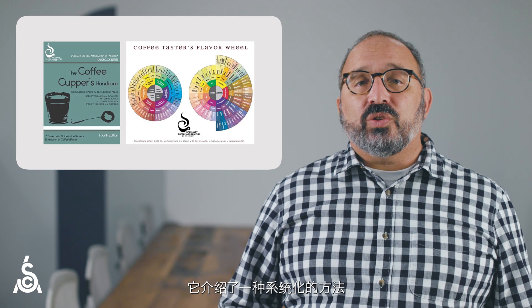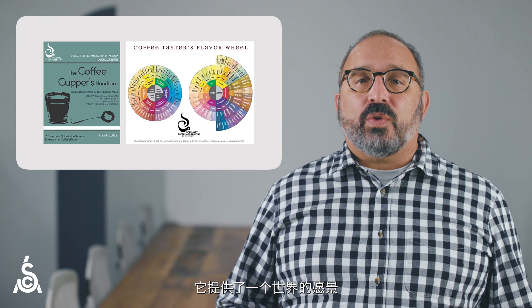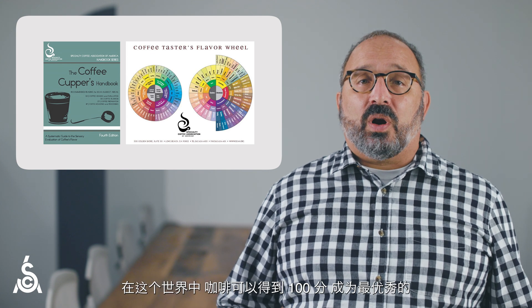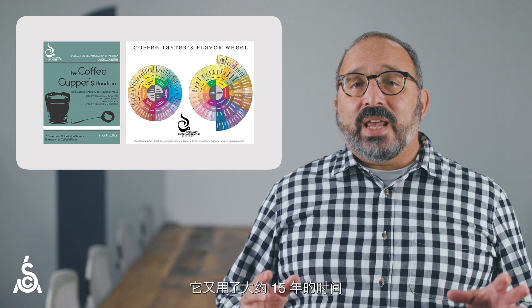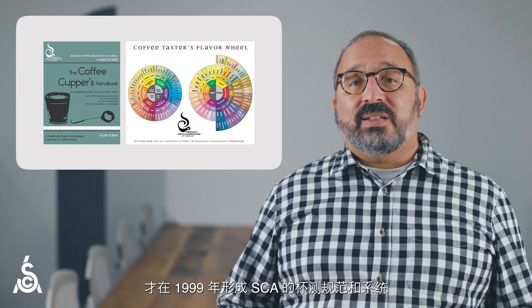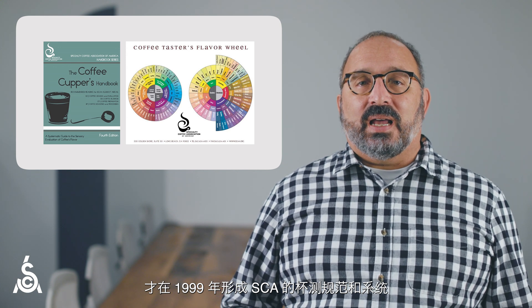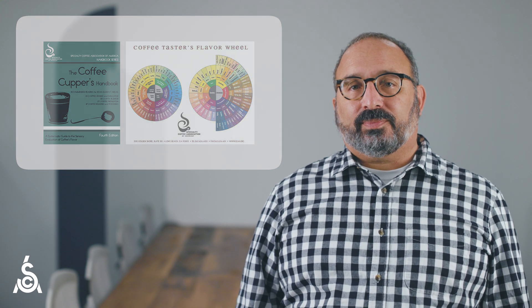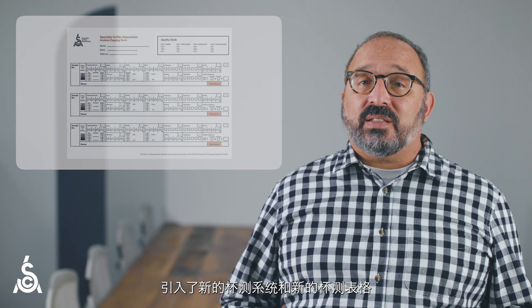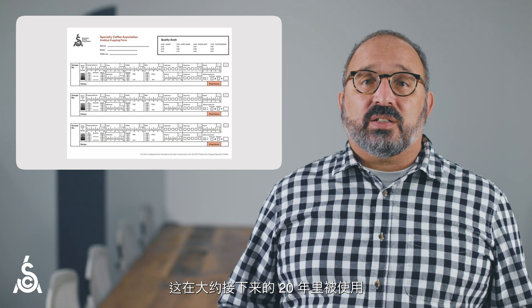It introduced a systematized approach, but it was also aspirational. It offered a vision of a world where coffees could score 100 points if they were the best of the best. It would take another 15 years or so to take shape as the SCA's cupping protocol and system in 1999, which would then settle about five years later in 2004. So in 2004, a new cupping system and new cupping form were introduced, which would be used roughly for the next 20 years.